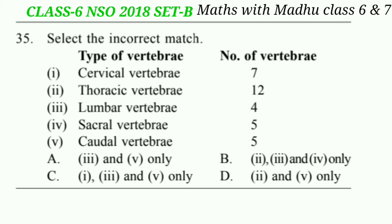Now question 35: select the incorrect match. Types of vertebrae and their numbers are given. Statement I: cervical vertebrae 7 - this is the correct match. Thoracic vertebrae 12 - this is also the correct match. Lumbar vertebrae - this is the incorrect match, lumbar vertebrae are 5 in number. Sacral vertebrae 5 - correct match. Caudal vertebrae 5 - this is also an incorrect match, because caudal vertebrae are 4 in number in human beings. So the correct answer will be option A: statements III and V only.